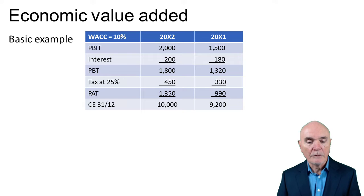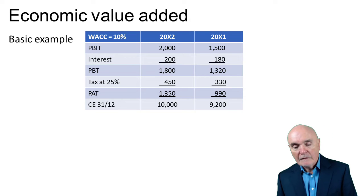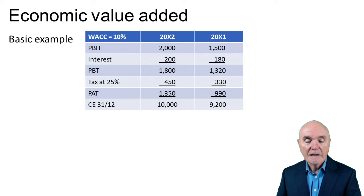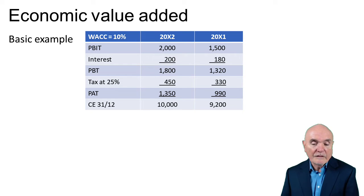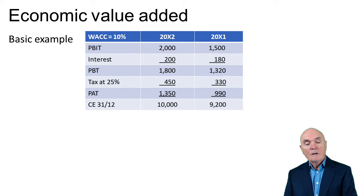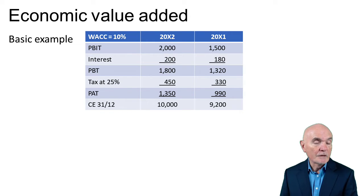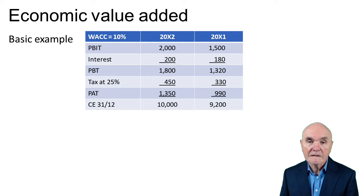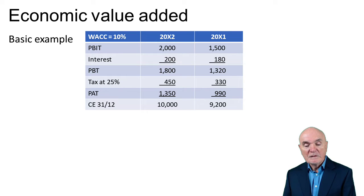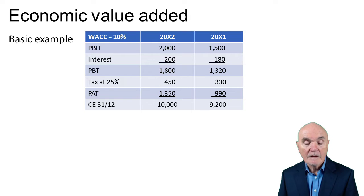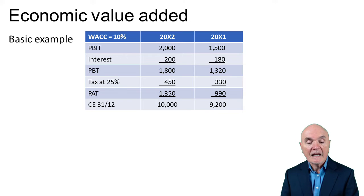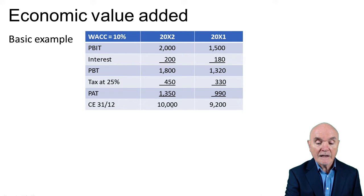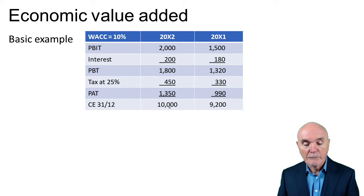Let's see a simple example. Here we have two years: 2X1 is two years ago, and 2X2 is the year just finished, both with year ends at 31st December. We have the profit before interest and tax — that's the operating profit — then interest charged, giving profit before tax. Tax is taken at 25% in both cases, giving profit after tax. Capital employed at the end of 2X1 is 9,200, and at the end of 2X2 it is 10,000, an increase of 800.